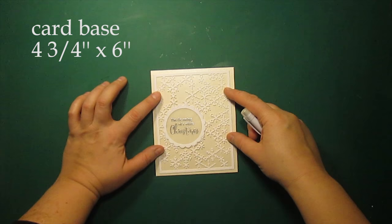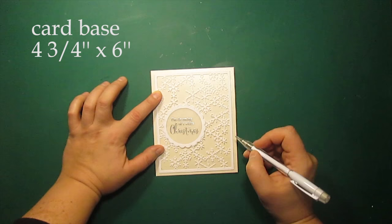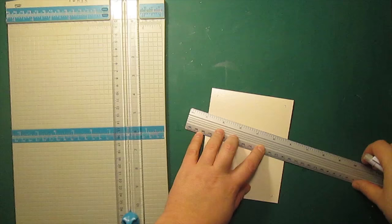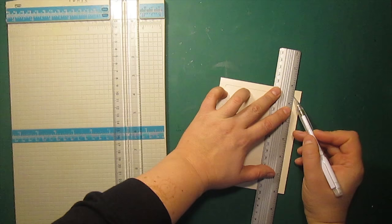I'm positioning my lacy panel over the card base and tracing the corners on the inside as I'm planning to create an open frame. Then I'm connecting all the corners with a pencil and I will use a paper trimmer to cut out an opening.